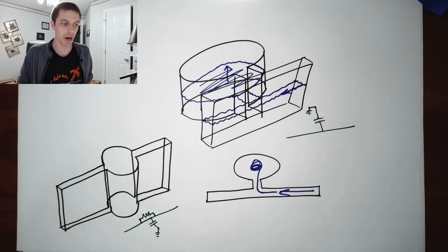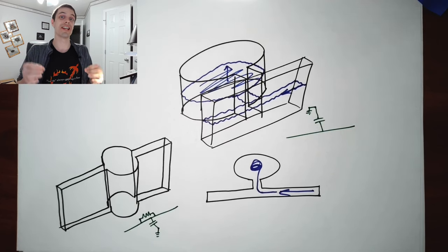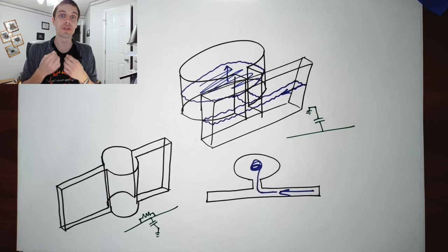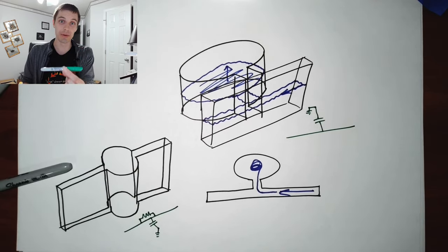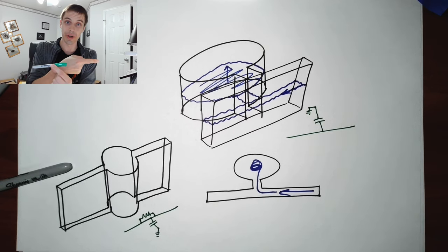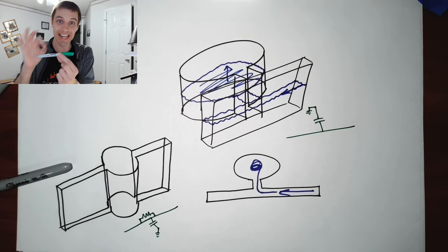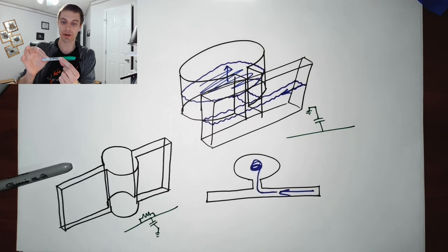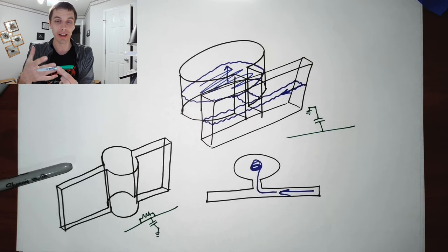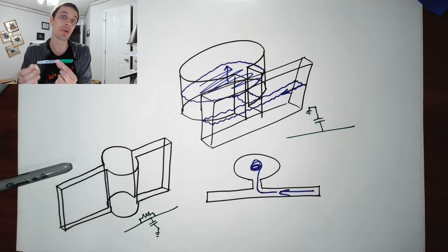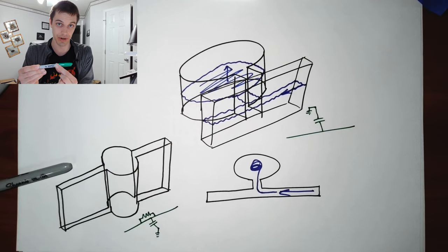Inductors are where, whereas a capacitor resists changes in voltage by storing extra charge, an inductor resists changes in current. An inductor tries to stop electrons from accelerating. That means if this pen was an inductor and you started to push current through it, it would be really hard to get those electrons moving to initiate that current — and once those electrons were moving, they would want to keep going. It would also be really, really difficult to decelerate those electrons.